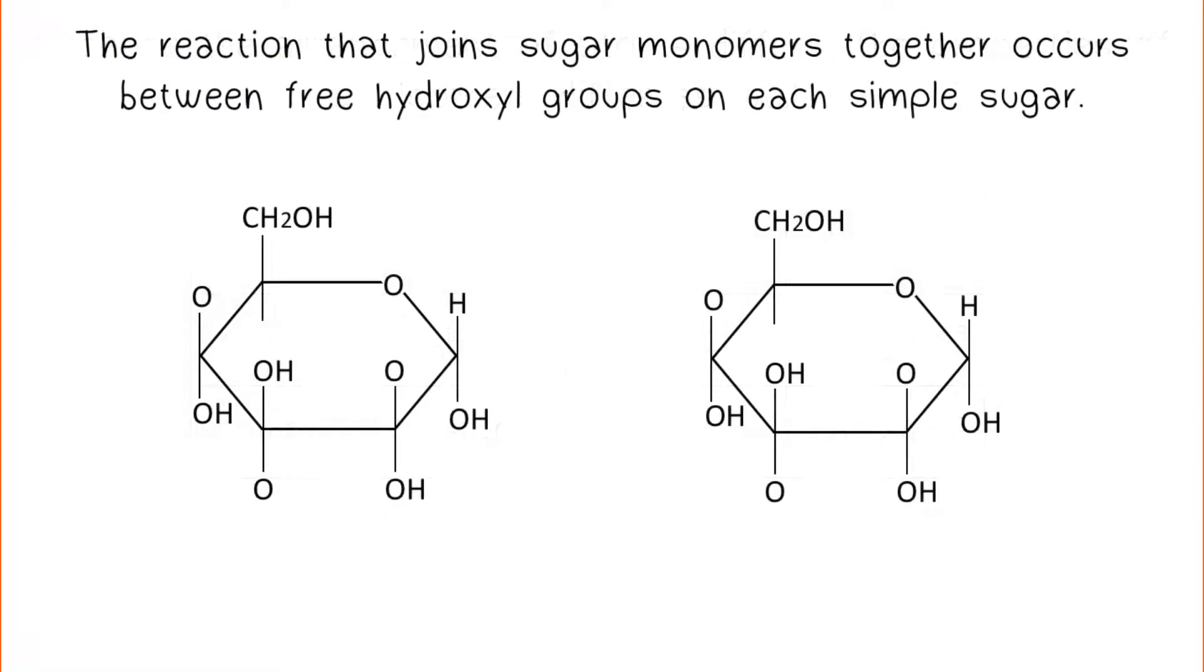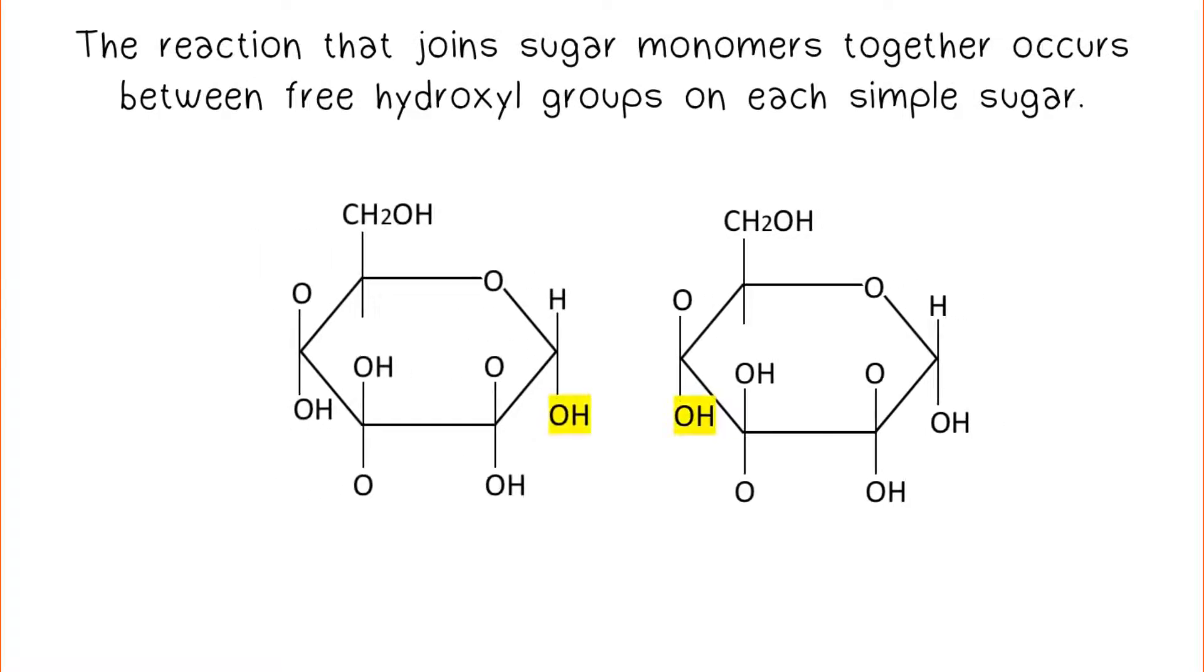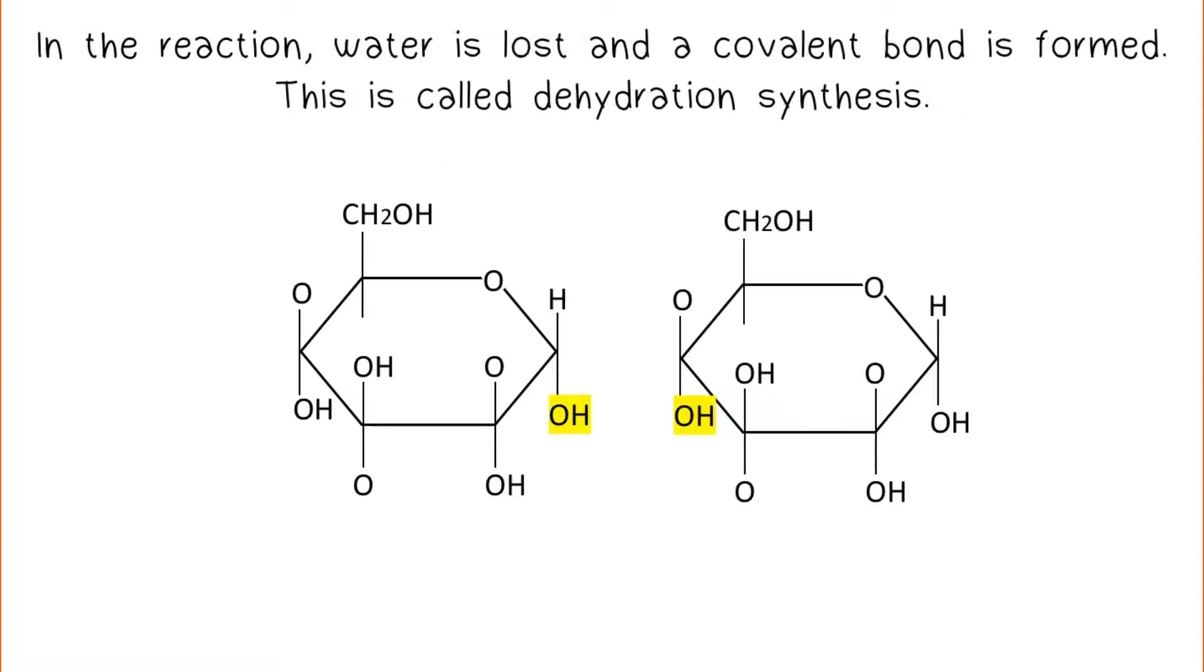The reactions that join sugar monomers together occur between free hydroxyl groups on each simple sugar. In the reaction, water is lost and a covalent bond is formed. This is called dehydration synthesis.